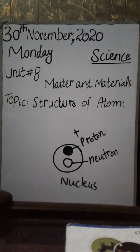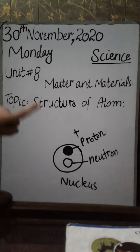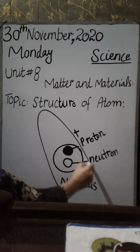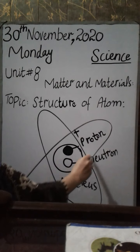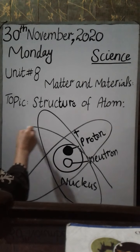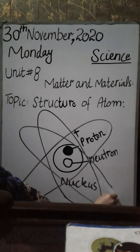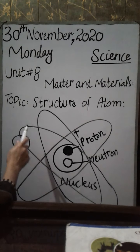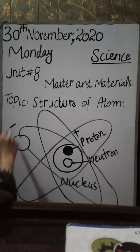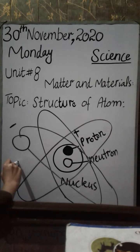There is another particle which we call electron. Now where can the electron be? The electron is actually moving outside the nucleus. Sometimes it moves on this side, sometimes like this, and sometimes like this. So this electron here has a minus charge, and we call it electron.